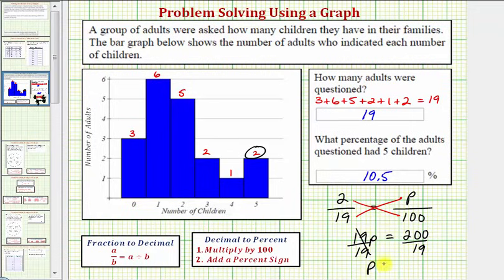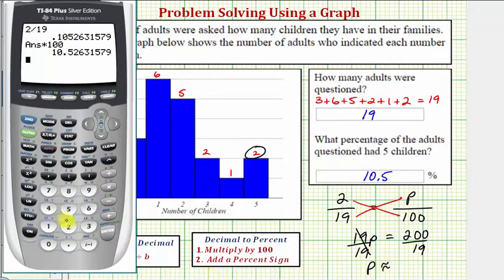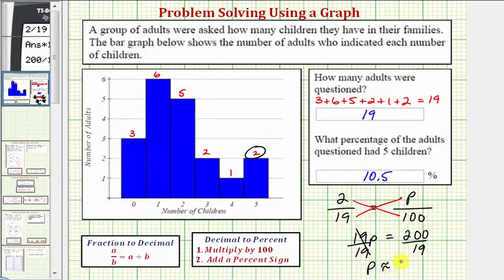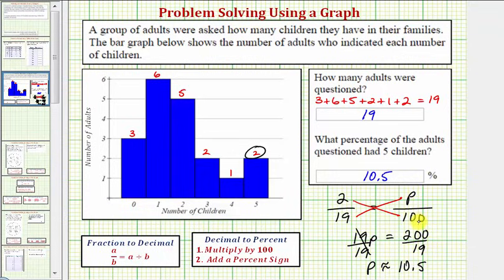Let's go back to the calculator. Two hundred divided by nineteen, notice is approximately ten point five. Ten point five over one hundred is equal to ten point five percent.